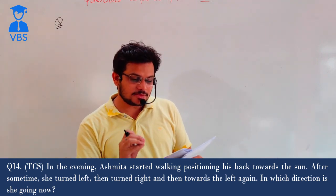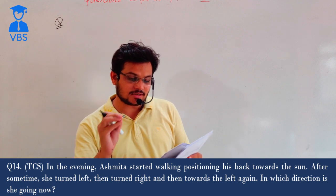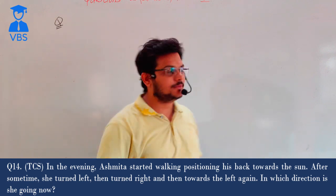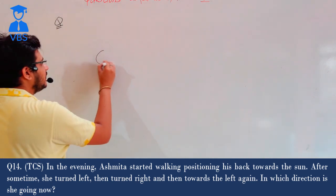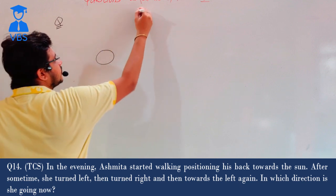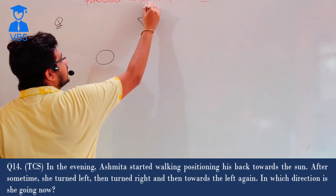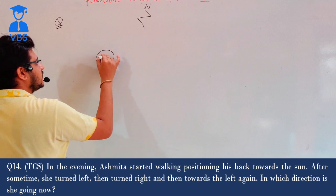In the evening, Ashwita started walking positioning her back towards the sun. First of all, where is the sun in the evening? West side. If north is here, then this sun is here.